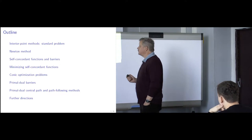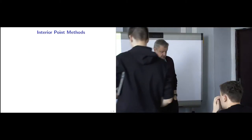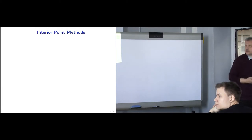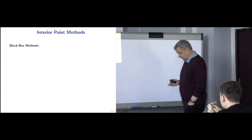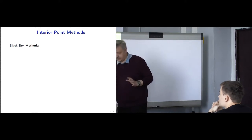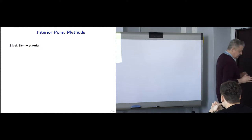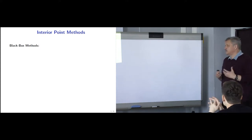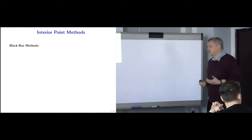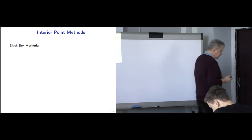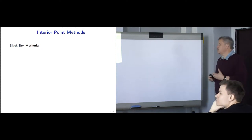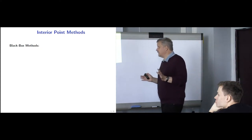All of this is related to the construction of special functions which describe our optimization problem. Let us start from some motivation — why do we need that? At the moment when people started to think in this direction, the theory of convex optimization was absolutely perfect. There was a complexity theory for black box methods telling us how fast an optimization algorithm can be, and in all classes at that time we had optimal methods implementing this efficiency bound.